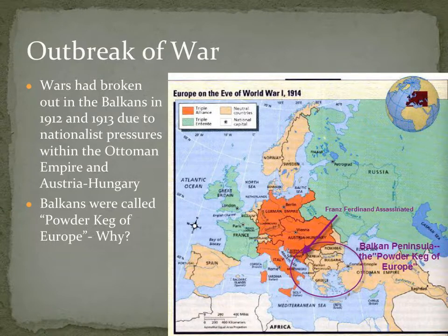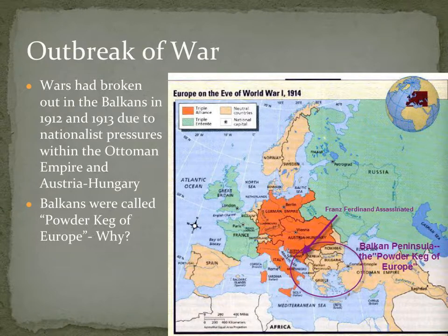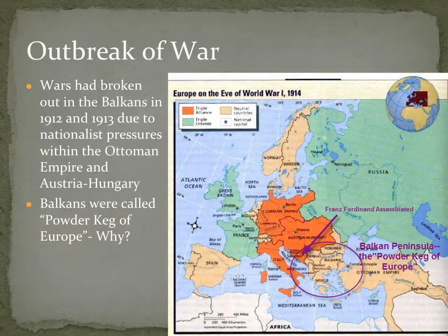In this region there were lots of different ethnic minorities — some within the Ottoman Empire, some within the Austro-Hungarian Empire — and these different ethnic minorities wanted their own nation. They didn't want to be Austrian or Ottoman. So the Balkans are often referred to as the powder keg of Europe, meaning there's so much tension that all it would take is one spark and the whole thing would blow up into a major war — which is exactly what happened.